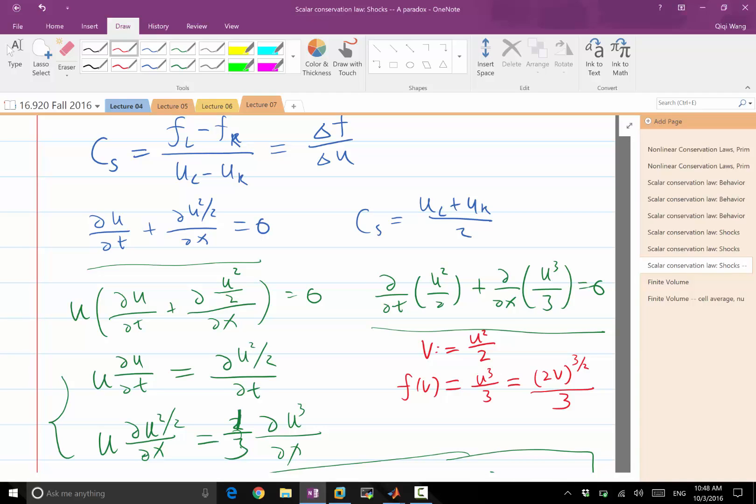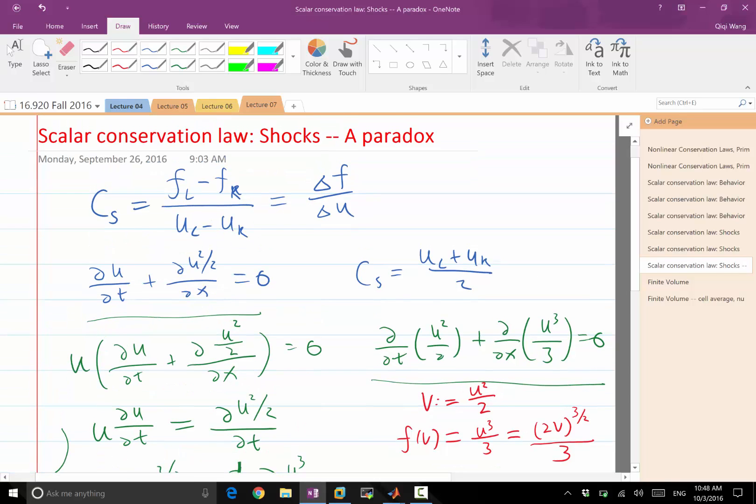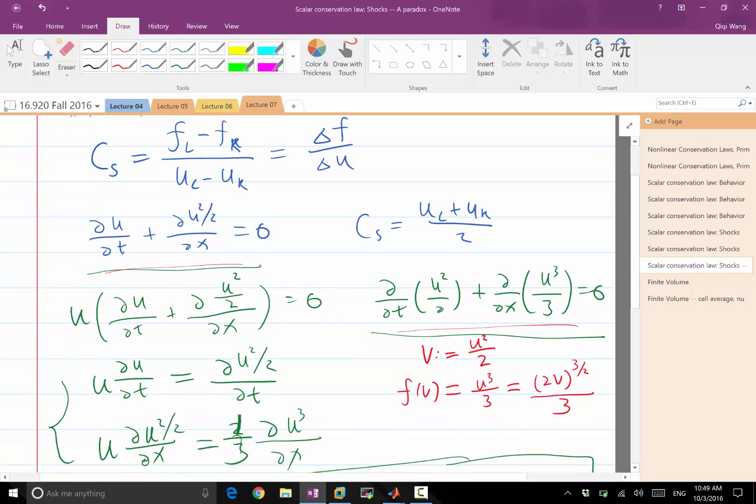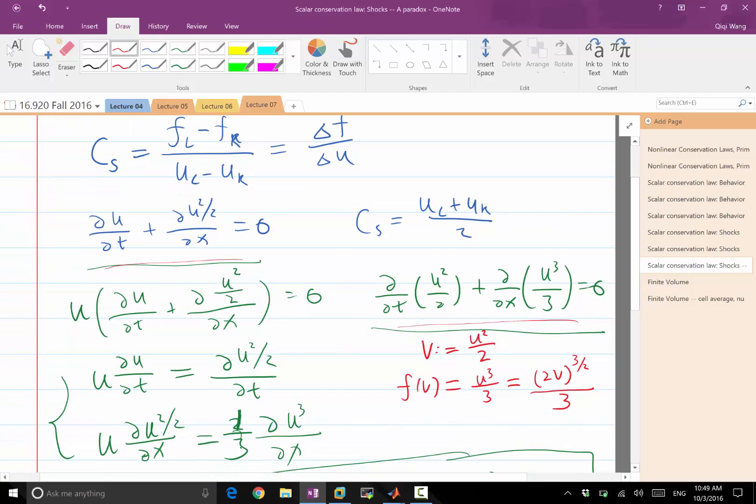This is nothing but writing the same equation, Burger's equation, into a different form by doing a bunch of manipulations of the derivatives. But with that alternative way of writing the conservation law, we have a different shock speed.